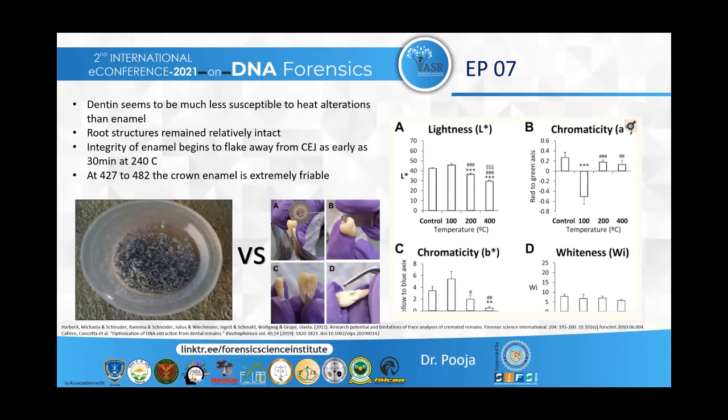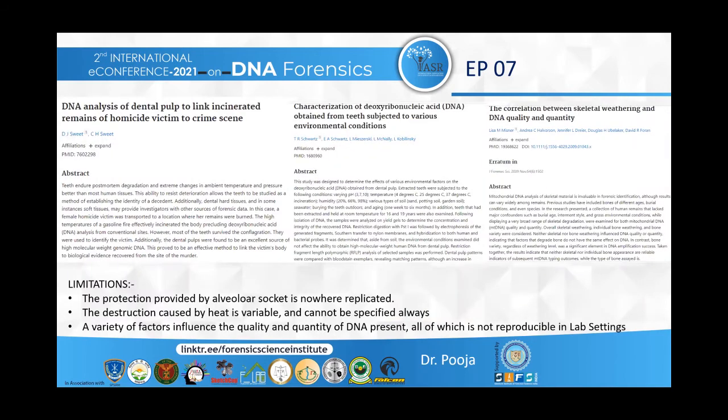There are certain limitations encountered when studying the different published journal articles. The protection provided by the alveolar socket is not replicable in a laboratory atmosphere. The destruction caused by heat is variable and cannot always be specified. A variety of factors influence the quality and quantity of DNA present, all of which are not reproducible in a lab setting.